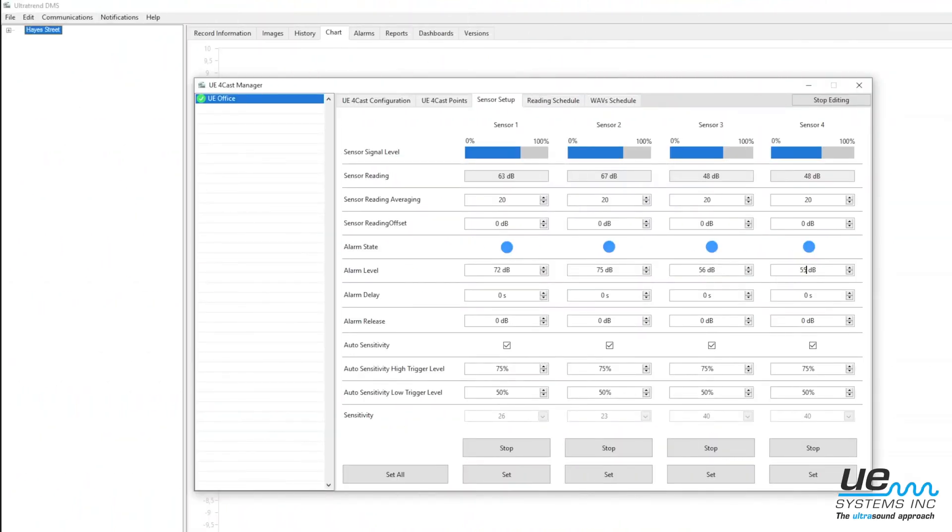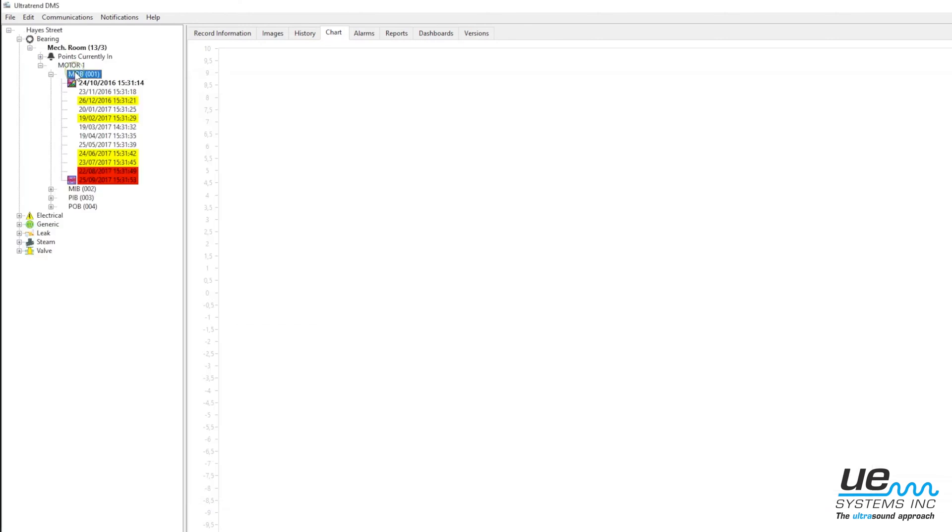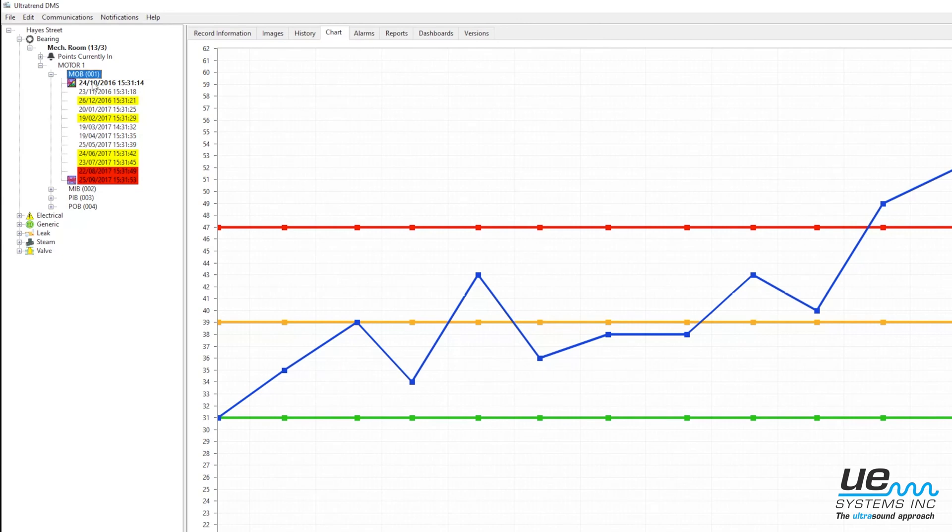All data is logged into the DMS software. Remotely check decibel readings, bearing historical readings, set up alarms and notifications, and analyze sound recordings.